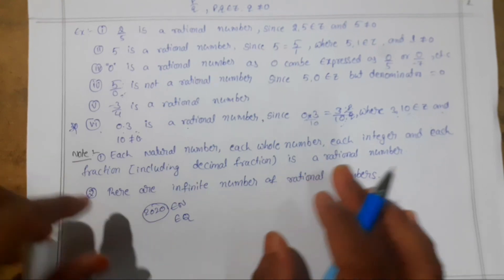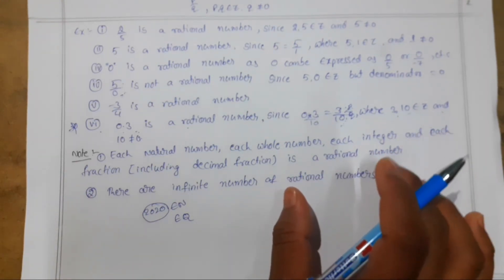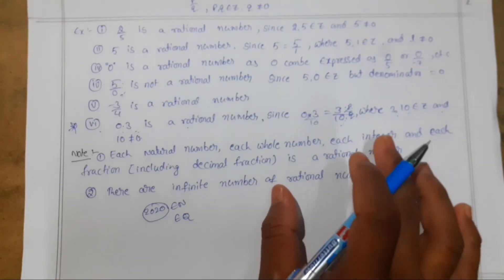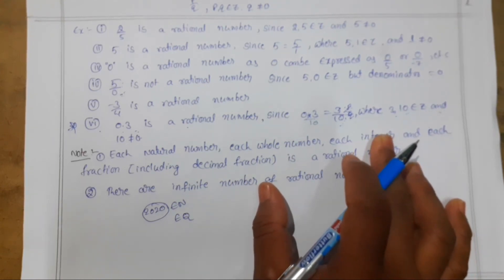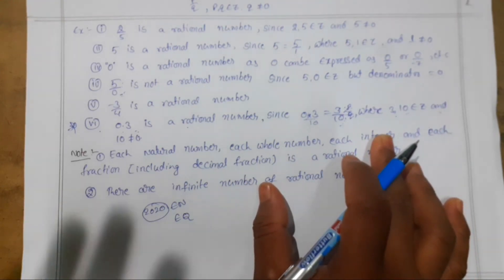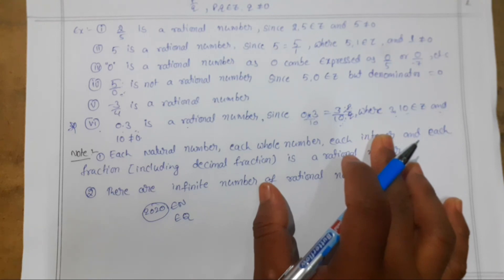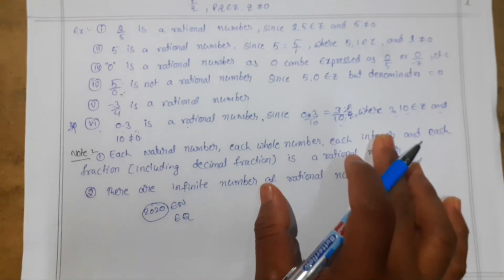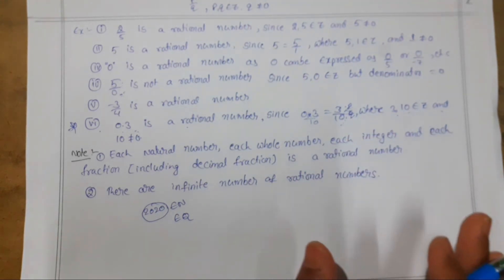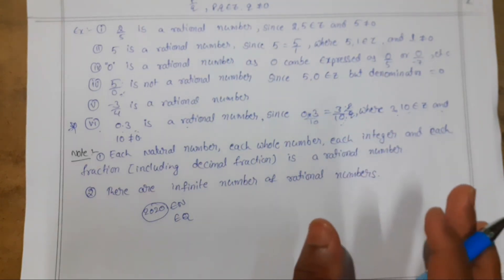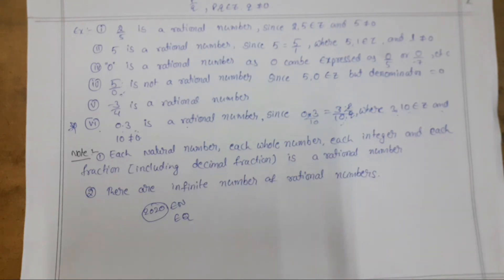This is a brief introduction regarding rational numbers. To revise: the numbers which can be written in the form p/q, where p and q are integers and q is not equal to zero, are called rational numbers. The set of rational numbers is denoted by Q.